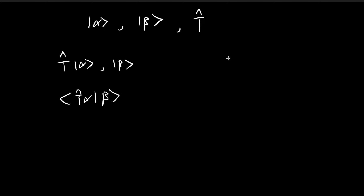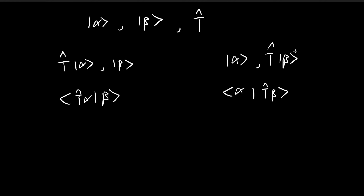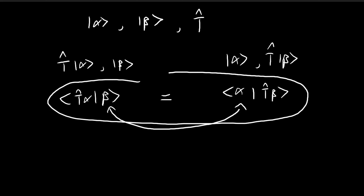Now let's switch things up a bit. Instead of applying the linear transformation to alpha, I'm going to apply it to beta. So now I want to take the inner product between alpha and the vector obtained after applying the linear transformation to beta. It would be natural to ask how these two values compare. For some linear transformations these might not be equal, but for others they actually are equal. Those transformations where this equality is satisfied are called Hermitian transformations.